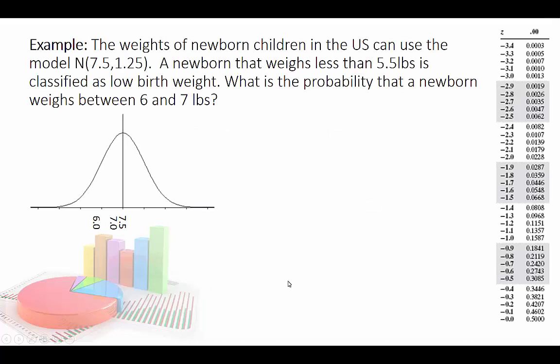So let's start with this example. We have weights of newborn children in the U.S. — we can use the normal model N(7.5, 1.25). A newborn who weighs less than 5.5 pounds is classified as low birth weight. What is the probability that a newborn weighs between 6 and 7 pounds?